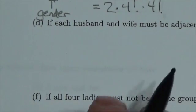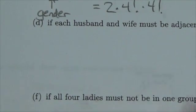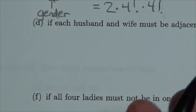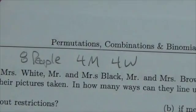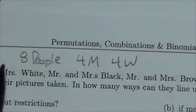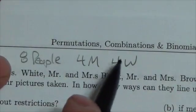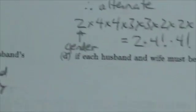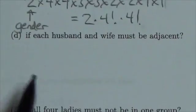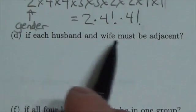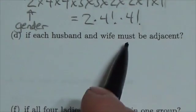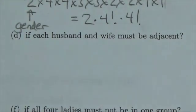Hi, everyone. So in this question here, we're looking at a permutation with restrictions. We're looking at four different couples — there are eight people, four men and four women. And what we're seeing right now is that the couples have to stand together; the husband and wife must be adjacent.